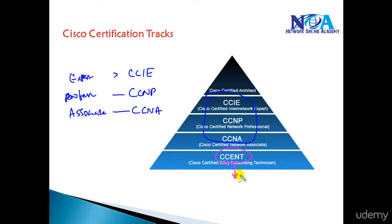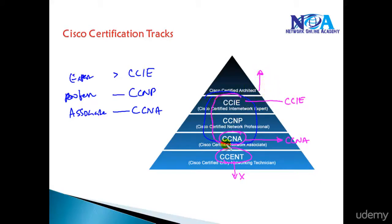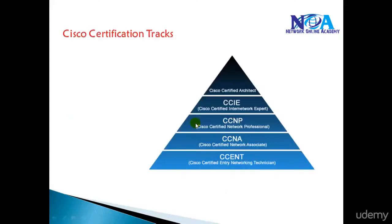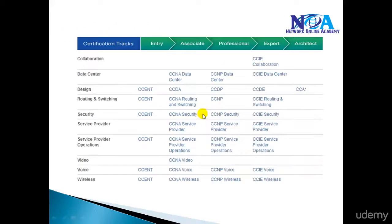These are the three major certification levels. There are also some entry level certifications, but less commonly pursued. People who want to start a career in Cisco networking typically start with CCNA. The highest level is CCIE, and above that there is an Architect level certification, which is quite rare. Most people go with CCNA, CCNP, and CCIE certifications.